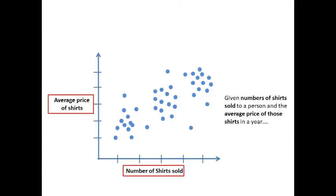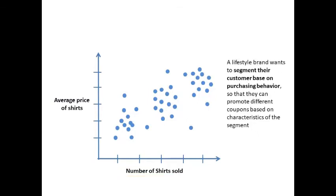Given number of shirts sold to a person and the average price of those shirts in a year, a lifestyle brand wants to segment their customer base on purchasing behavior so that they can promote different coupons based on characteristics of that segment.